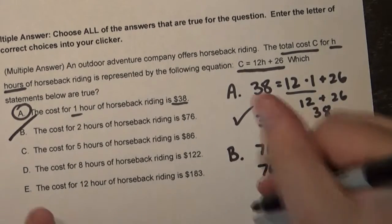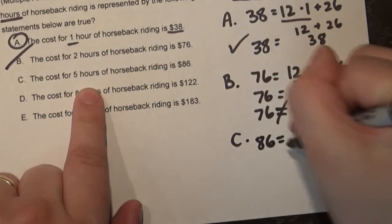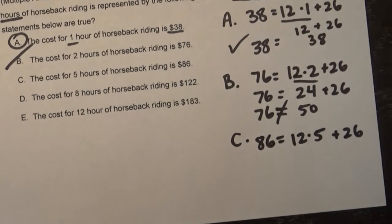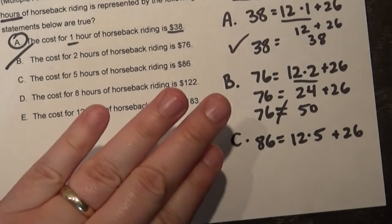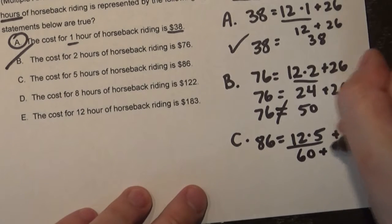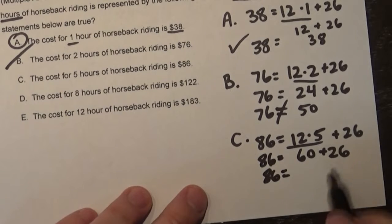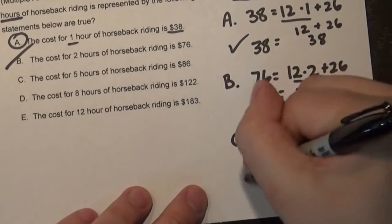Letter C says the cost for five hours is $86. So 86 equals 12 times five plus 26. What is 12 times five? That would be 12, 24, 36, 48, 60 — so 12 times five is 60. If you didn't know that you could always do the math off to the side. So is $86 equal to 60 plus 26? 60, 70, 80, 86. Yes. So C is correct.